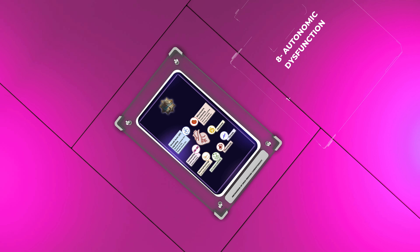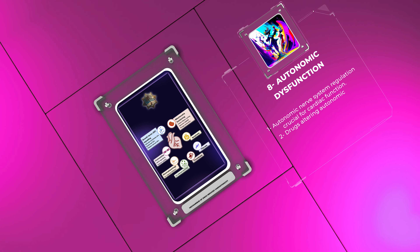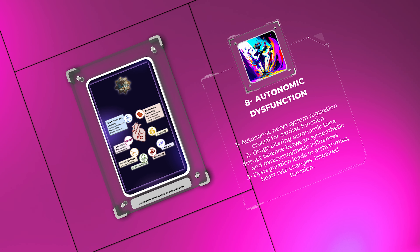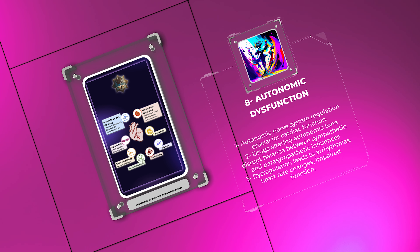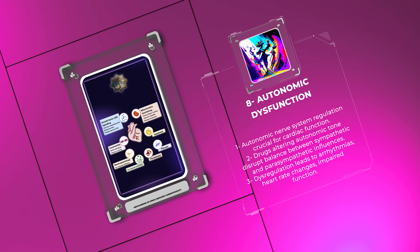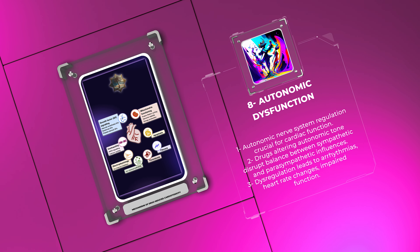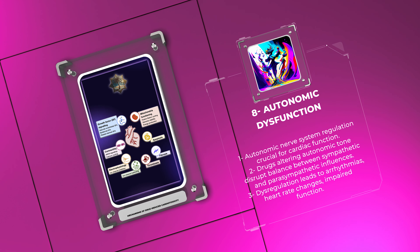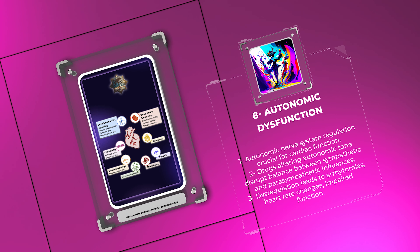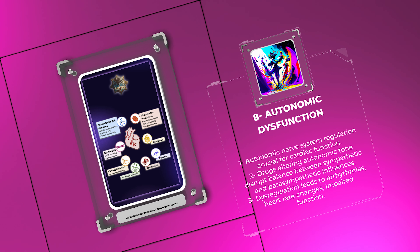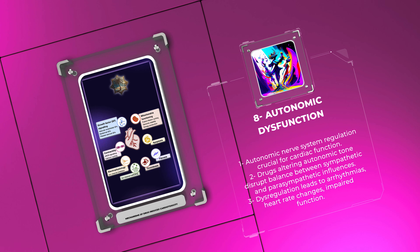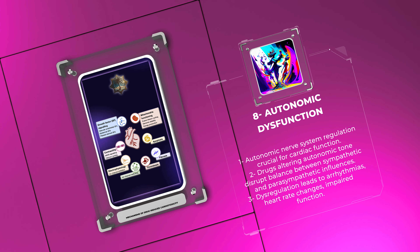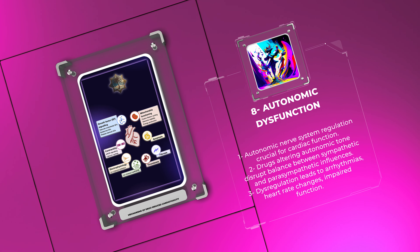The autonomic nervous system plays a significant role in regulating cardiac function. Drugs that alter autonomic tone can disrupt the delicate balance between sympathetic and parasympathetic influences on the heart. Disregulation of autonomic control can lead to arrhythmias, changes in heart rate, and impaired cardiac function.